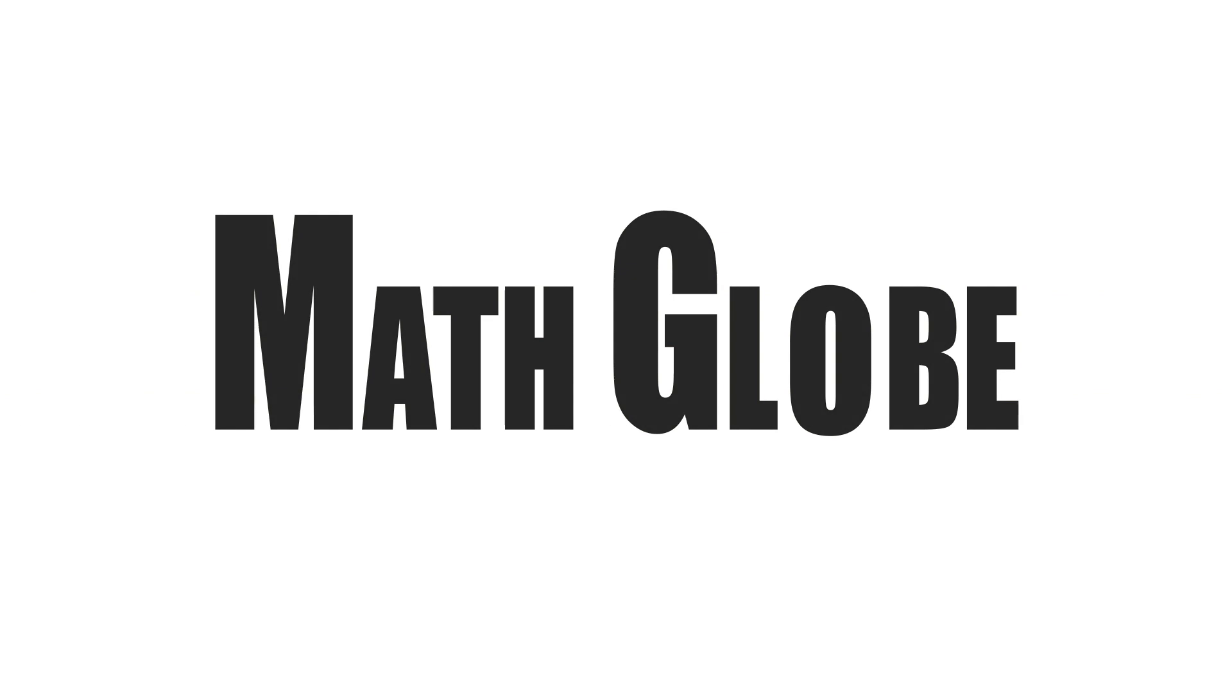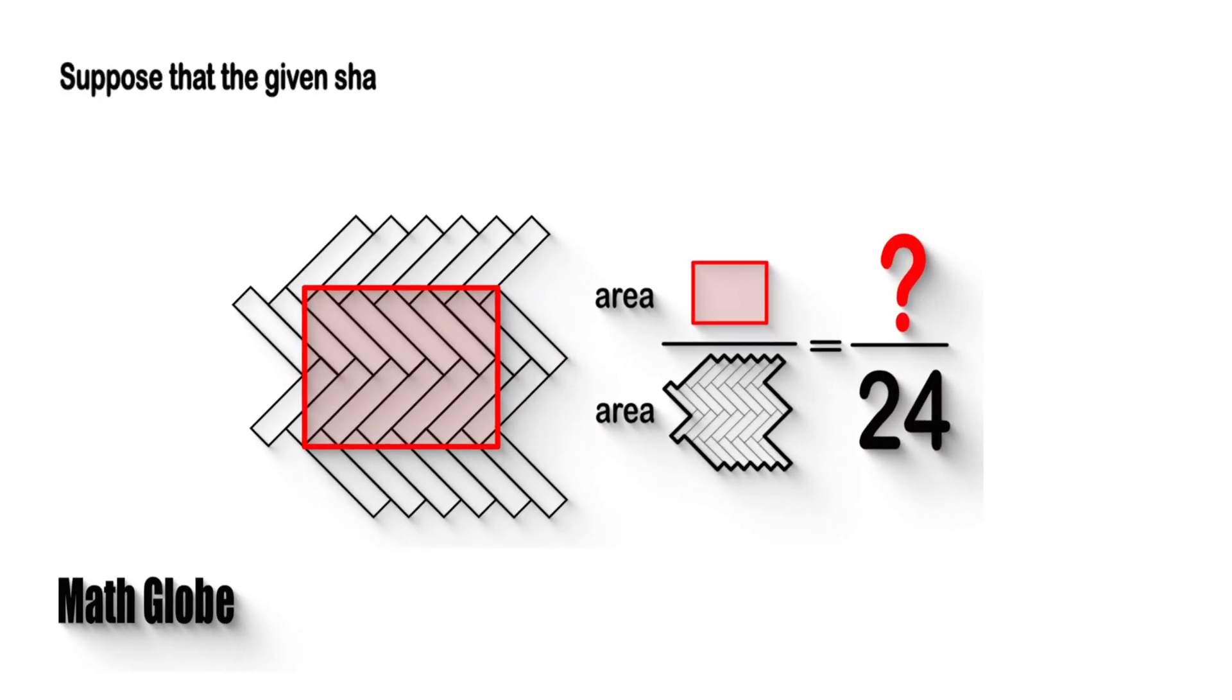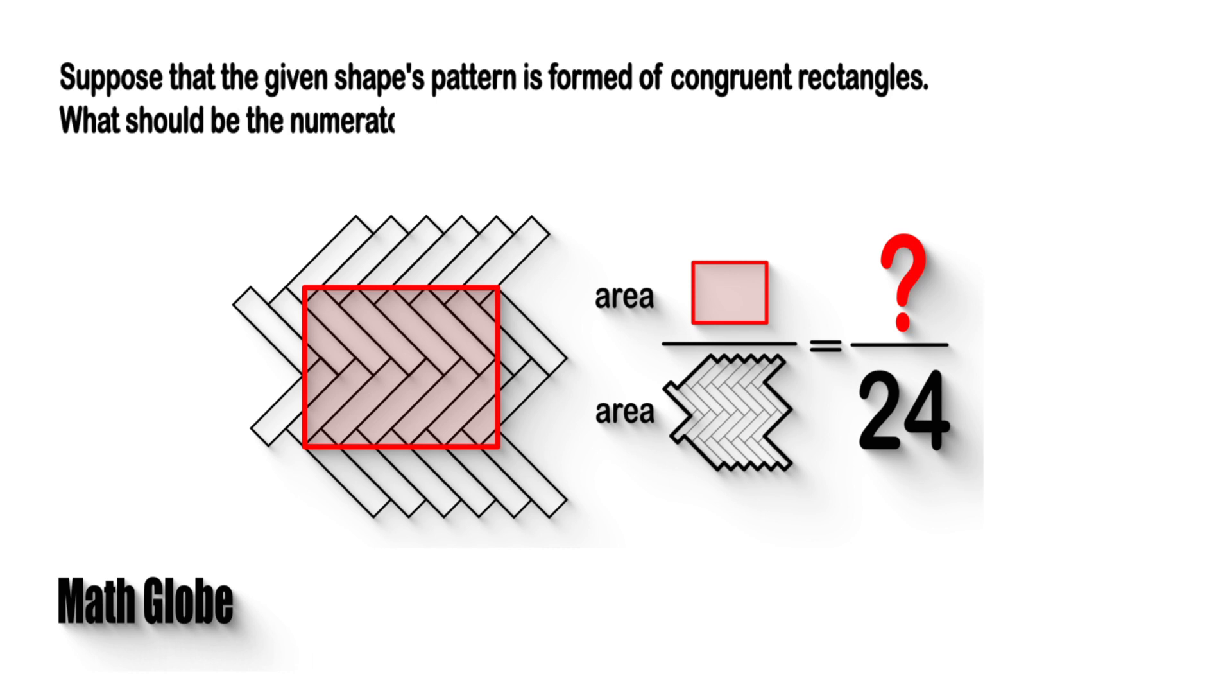Hi, this is MathGlobe. Suppose that the given shape's pattern is formed of congruent rectangles. What should be the numerator in the fraction shown, when the fraction is in its simplest form?